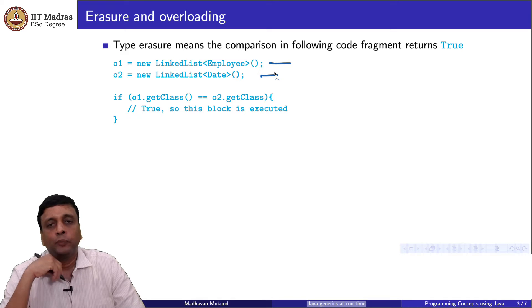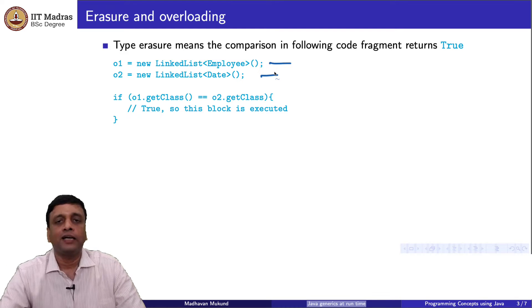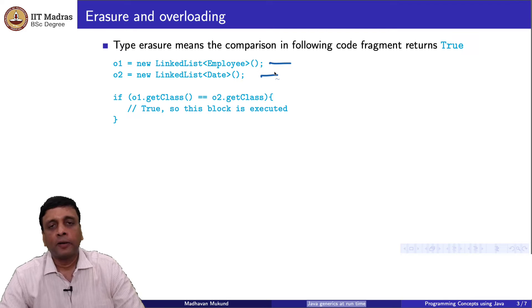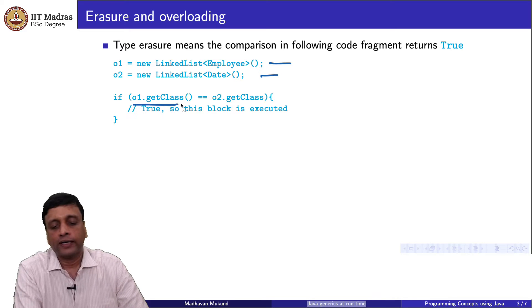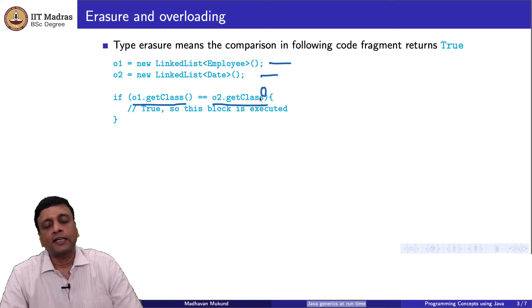There are some other strange consequences of this. Suppose I create two concrete objects by instantiating a parameterized class: object one is a linked list of employees and object two is a linked list of date. You might imagine that even though the type has been erased at runtime, these are created very clearly as two different types. We know that at compile time, these two have no relationship — we cannot substitute a linked list of employee for a linked list of date or vice versa.